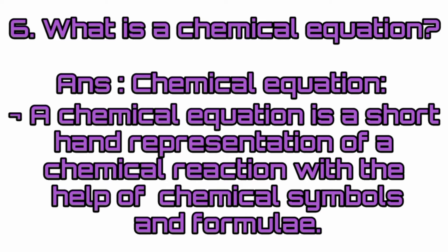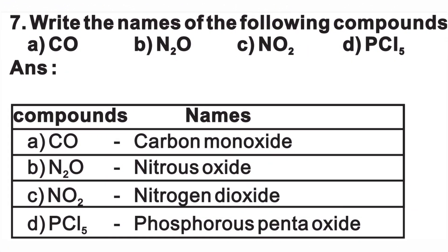What is a chemical equation? A chemical equation is a shorthand representation of a chemical reaction with the help of chemical symbols and formulae. Write the names of the following compounds: CO — carbon monoxide; N₂O — nitrous oxide; NO₂ — nitrogen dioxide; PCl₅ — phosphorus pentachloride.